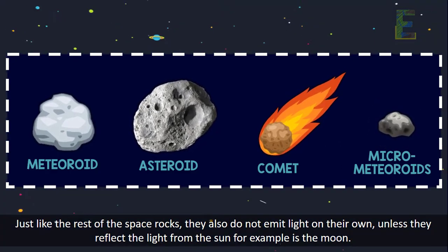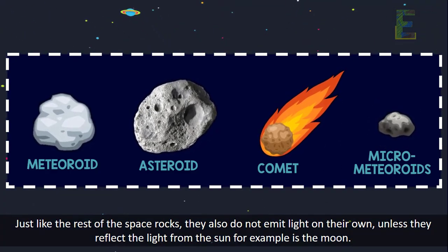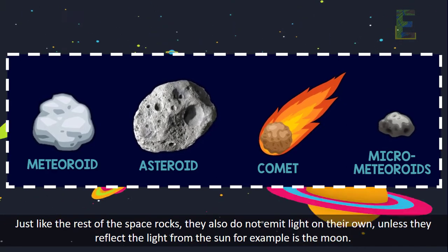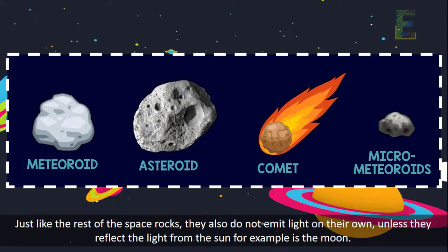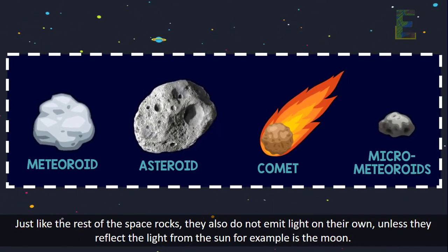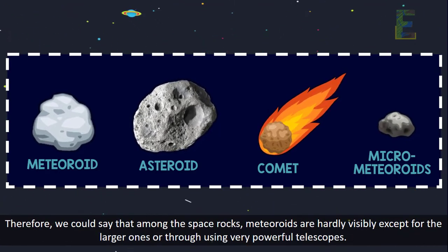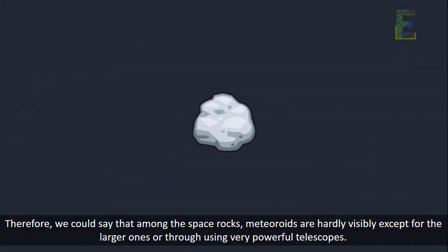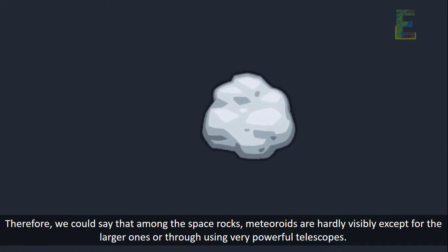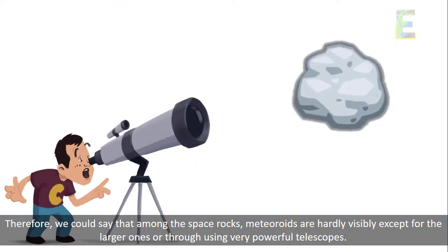Just like the rest of the space rocks, they also do not emit light on their own, unless they reflect the light from the Sun — for example, the Moon. Therefore, we could say that among the space rocks, meteoroids are hardly visible, except for the larger ones that are seen using very powerful telescopes.